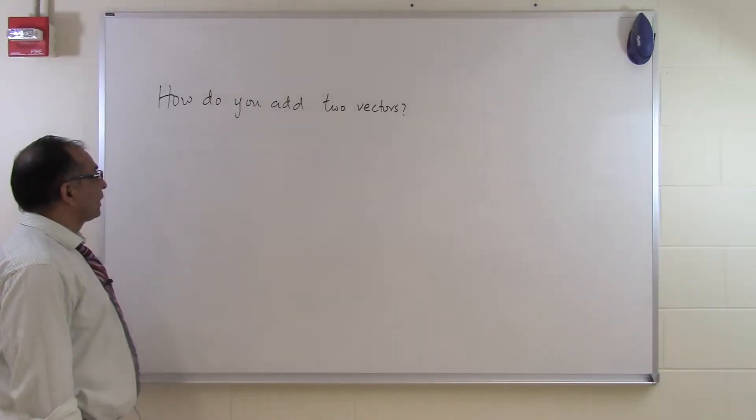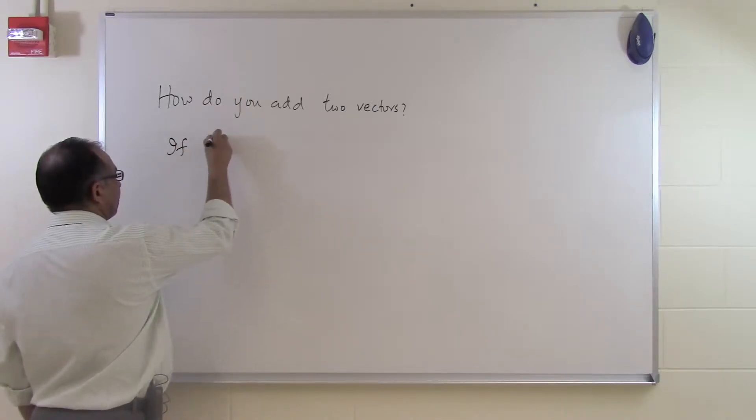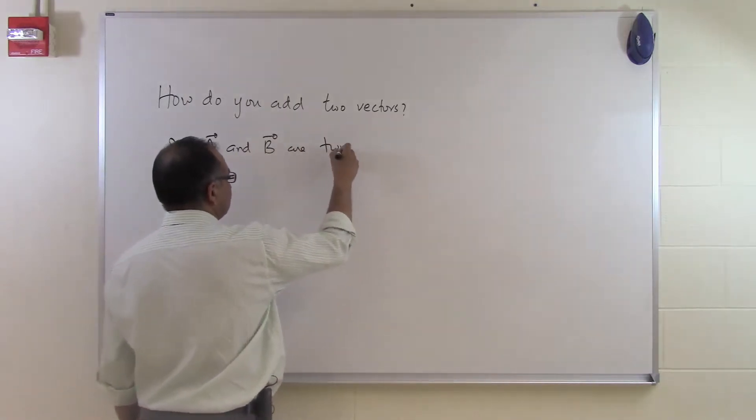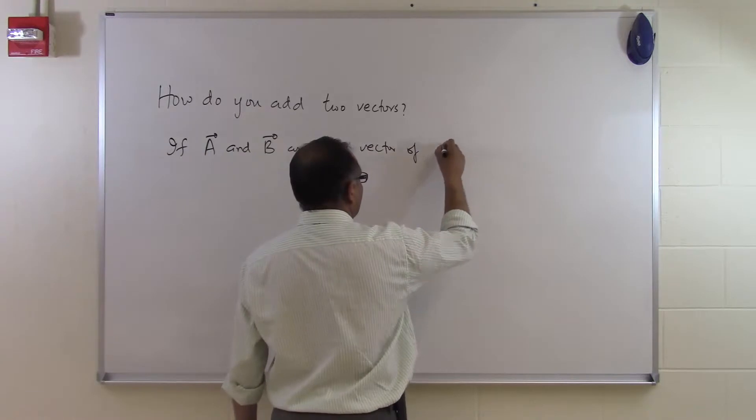In this segment we talk about how we can add two vectors. If vector A and another vector B are two vectors of dimension n.